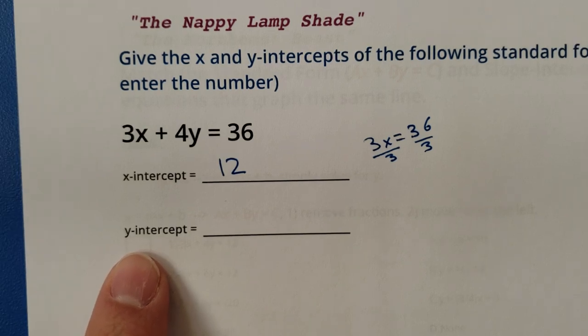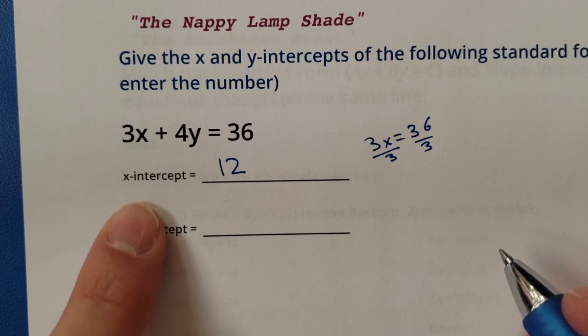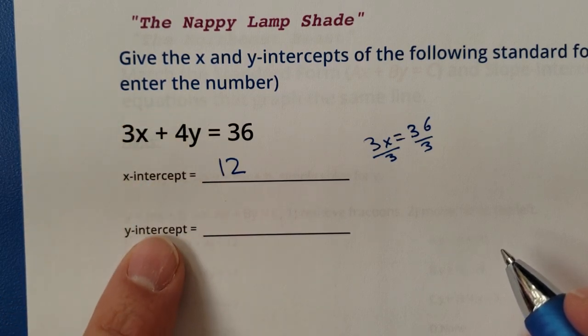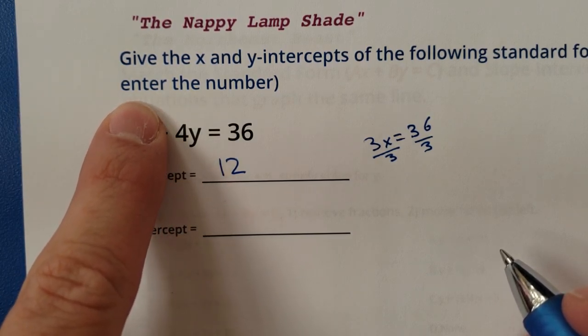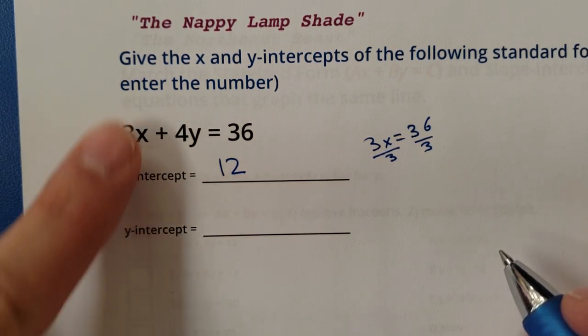All right, cool. One down, one to go. To find the y-intercept, I'm going to do the hide and divide method. So if I want to find the y-intercept, I'm going to hide the x. Mathematically, what I do is I'm basically plugging in a zero for x. Plug in a zero.